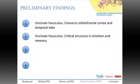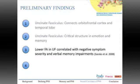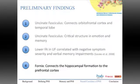The uncinate fasciculus, which connects the orbitofrontal cortex with the temporal lobe, showed decreased FA in our PNS group. The orbitofrontal cortex appears involved in first episode and may be more specific to negative symptoms. This white matter track is also critical for emotion and memory, and a study showed that lower FA values in this track correlate with negative symptom severity and verbal memory — consistent with our cognition findings. The fornix connects the hippocampal formation to the prefrontal cortex, two key areas highlighted in negative symptom research.